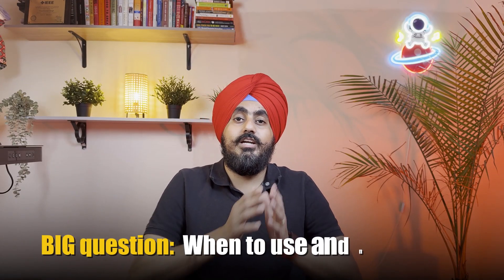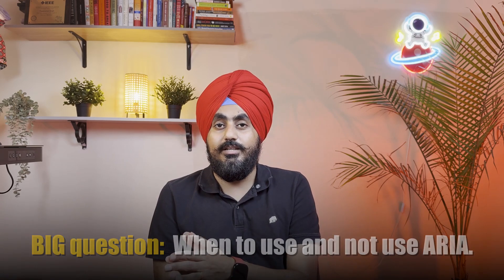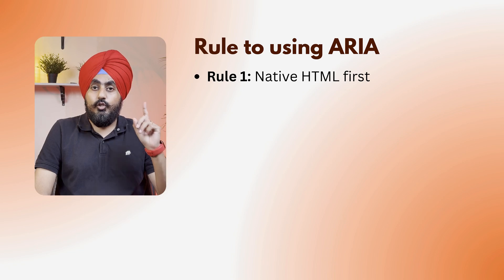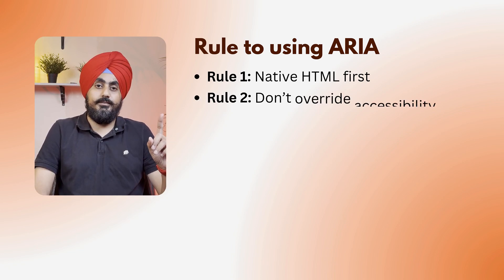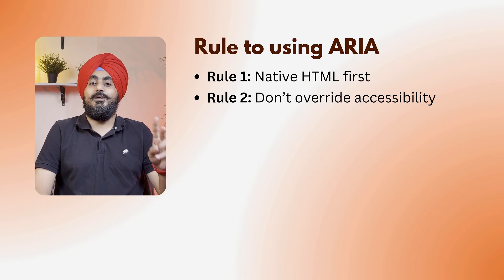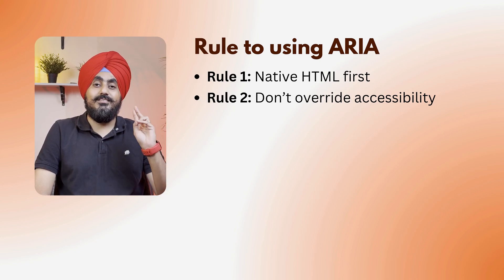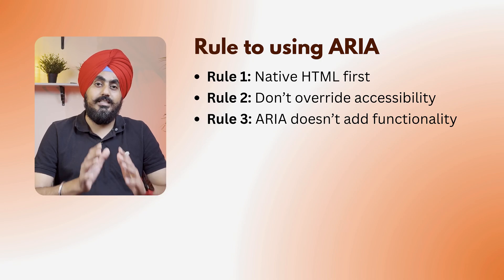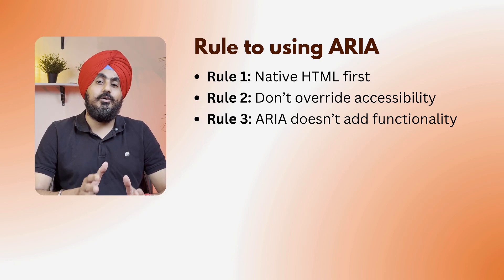Here's the big question: when to use and not to use ARIA. As they say, give someone a hammer and they'll try to hammer everything. Rule number one: native HTML first — use button instead of a div with role='button'. Rule two: don't override accessibility. If something is already accessible, don't mess it up with ARIA — commonly seen with select dropdowns. Rule three: ARIA does not add functionality. It describes what's already there. You still need keyboard support in your JavaScript.